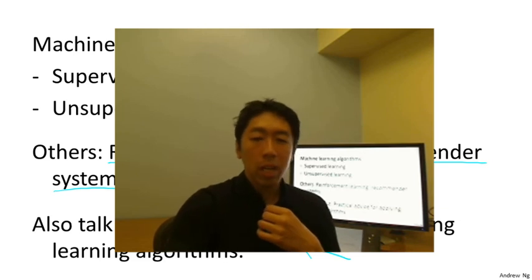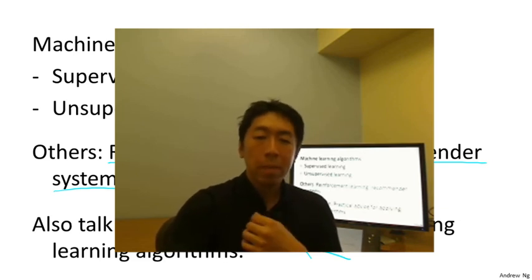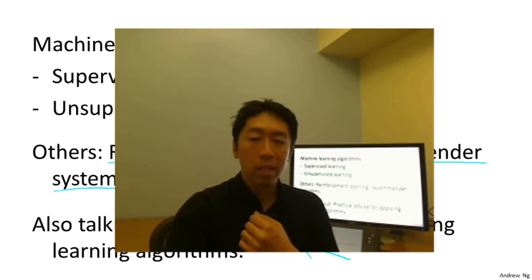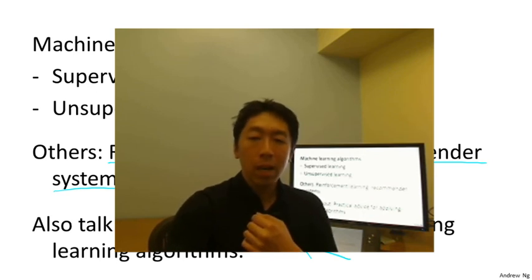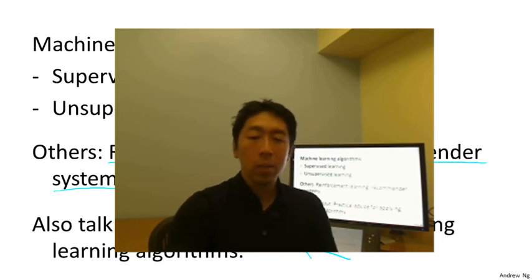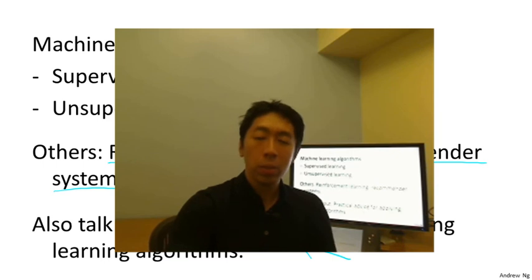I'm going to spend a lot of time teaching you best practices in machine learning and AI, and how to get this stuff to work — how the best people do it in Silicon Valley and around the world. I hope to make you one of the best people at knowing how to design and build serious machine learning and AI systems. So that's machine learning, and these are the main topics I hope to teach. In the next video, I'm going to define what is supervised learning, and after that, unsupervised learning, and also start to talk about when you will use each of them.